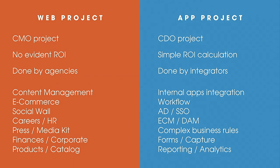When you look at an app project, it's more an IT project or CDO project. Here the ROI is important and easy to calculate. If you reduce the time spent on contracts and you have thousands of contracts to manage per year, you can reduce your headcount by half — that's immediate ROI. Going into the details, you talk about workflow, internal app integration, content and data synchronization, active directory, single sign-on, complex business rules, reporting, forms, and data capture.